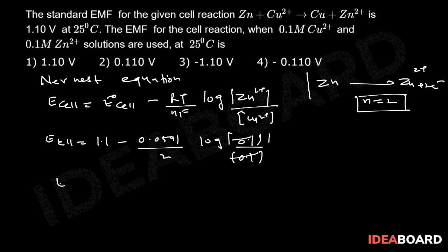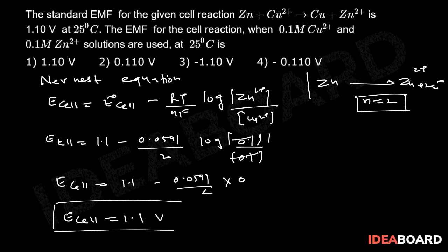The value of log 1 is 0, so E cell will be 1.1 minus 0.059 by 2 into 0, so the value of E cell is 1.1 volt, same as E not cell, and this is given in option 1, so option 1 is the correct answer.